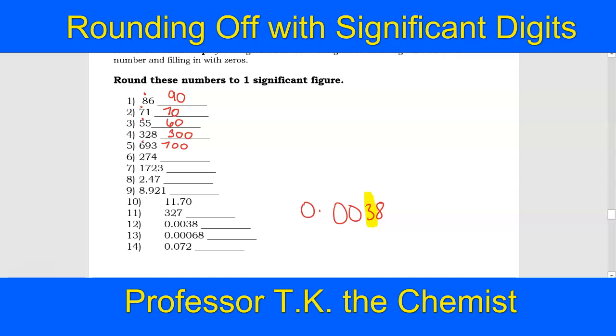In this case, you're going to still keep the zeros here, but that three goes to a four, so you end up with 0.004. Do not add the other zero, because if you do, that's going to give you two significant digits.